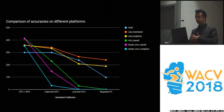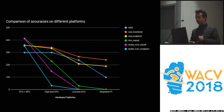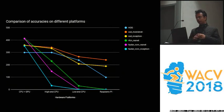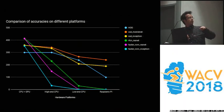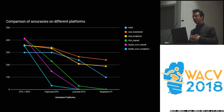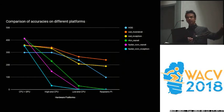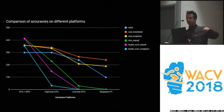Here is a comparison of the accuracies on different platforms. If you look at a lightweight algorithm like SSD MobileNet, shown here in orange, the accuracy more or less remains the same when you run it on different systems such as CPU plus GPU, a high-end CPU, a low-end CPU, or even a Raspberry Pi. But the algorithm accuracy for RFC and ResNet drastically reduces across hardware platforms with reducing compute power.